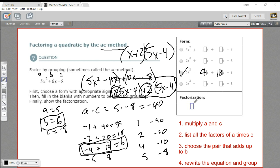And then our factorization, the answer would be X plus 2 times 5X minus 4. So that is how to factor a quadratic using the AC method.